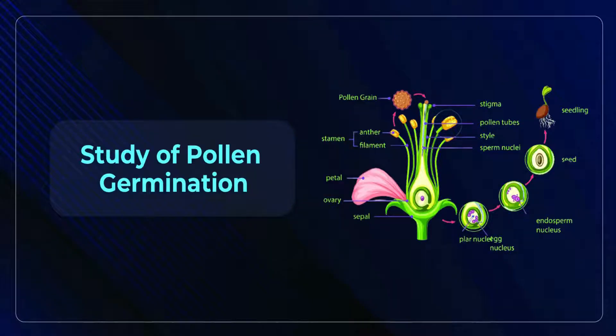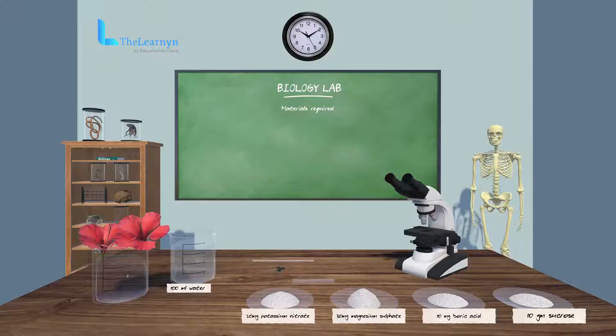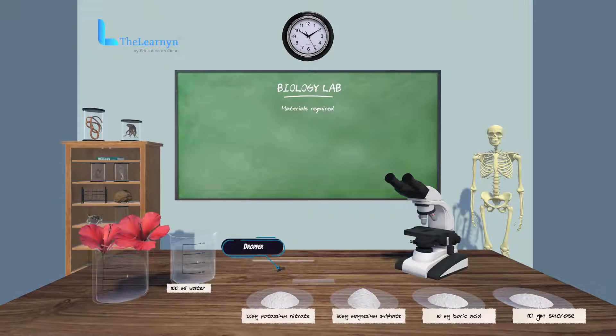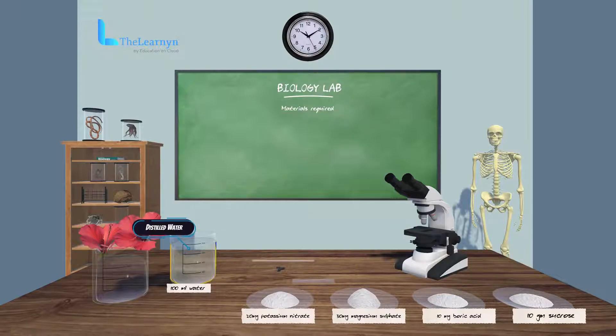Study of pollen germination. Materials required: fresh mature hibiscus flower, glass rod, dropper, glass slide, a beaker containing distilled water.